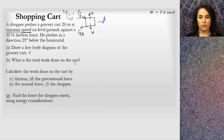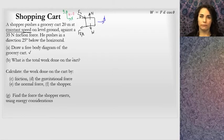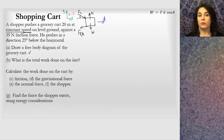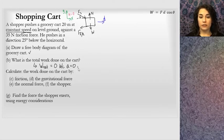Part B asks: what is the total work done on the cart? I want to pause here and go back to that constant speed condition. When something is moving at constant speed, it's not speeding up and not gaining energy, so the total work done — net work — equals zero. That's the answer to part B, and it has to do with the constant speed.